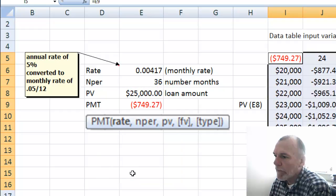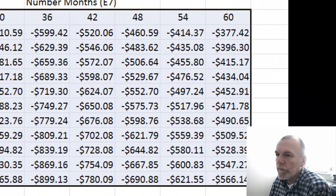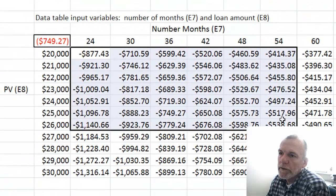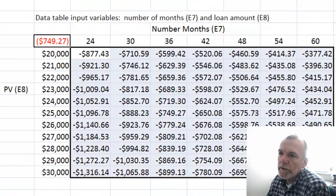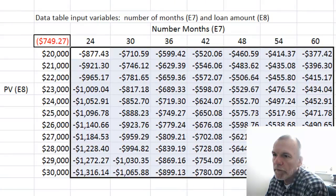And then what we find as an outcome is the sensitivity of the payment to those two different parameters: months and present value.